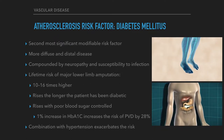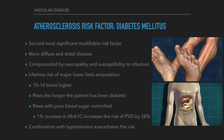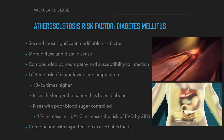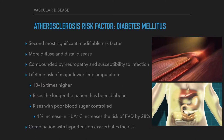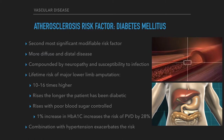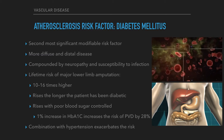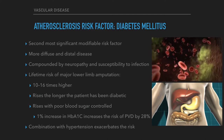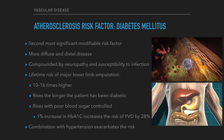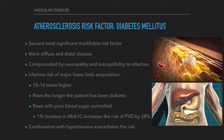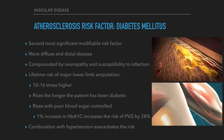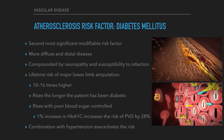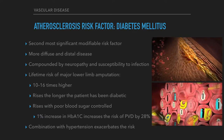Diabetes mellitus is the second most significant modifiable risk factor after smoking. Diabetics tend to develop more diffuse and distal disease, compounded by other diabetes-related complications such as neuropathy and increased susceptibility to infection. The lifetime risk of a major lower limb amputation is 10 to 16 times higher in a diabetic. The risk also rises the longer the patient has been diabetic and the more poorly the blood sugars are controlled. The UK Prospective Diabetes Study identified that for every 1% increase in HbA1c, the risk of peripheral vascular disease increased by 28%. The effects of diabetes can be ameliorated by good glucose control but cannot be completely avoided. The combination of diabetes with hypertension exacerbates the risk.